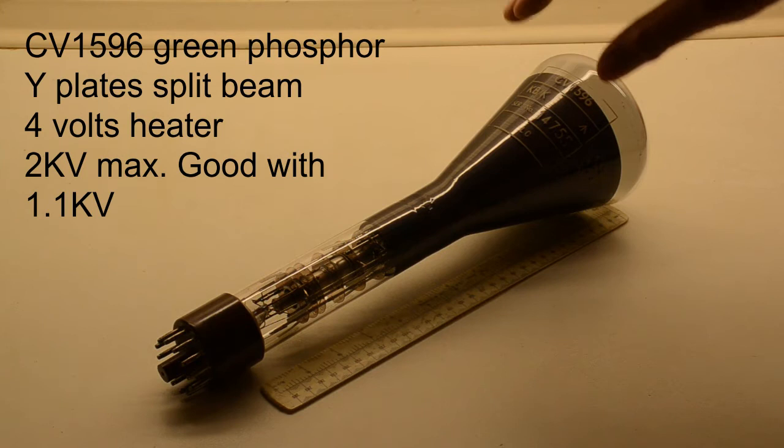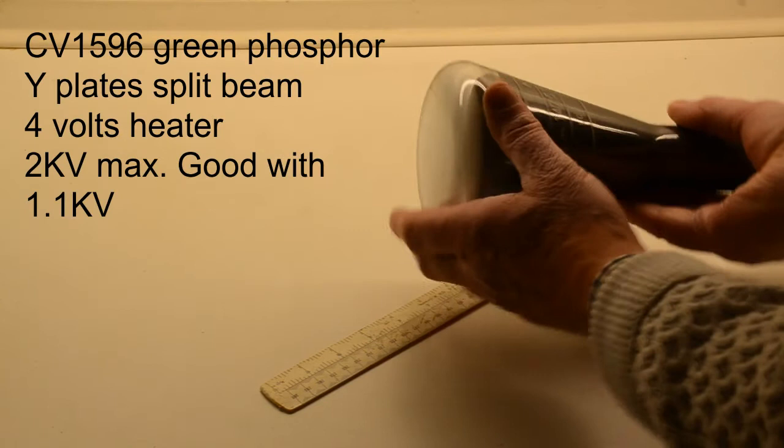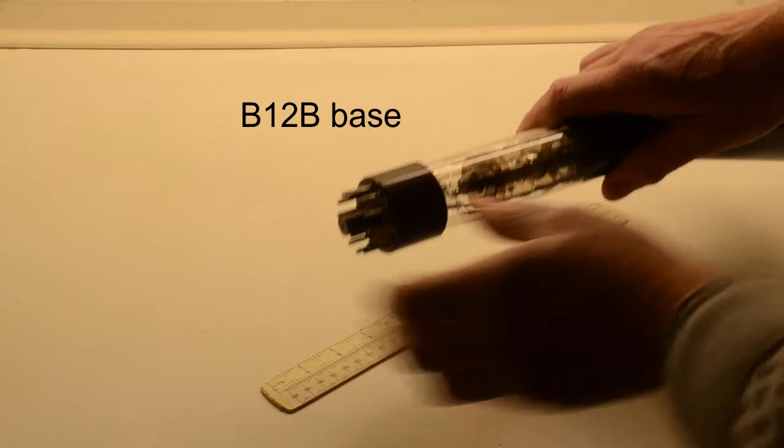This is once again quite an old tube so we do have the same rounded bowl here. The base is similar to the Tektronix scope we just saw but once again having the socket does help. This will run down to about 1100 volts and give a very nice trace. Great for projects again.